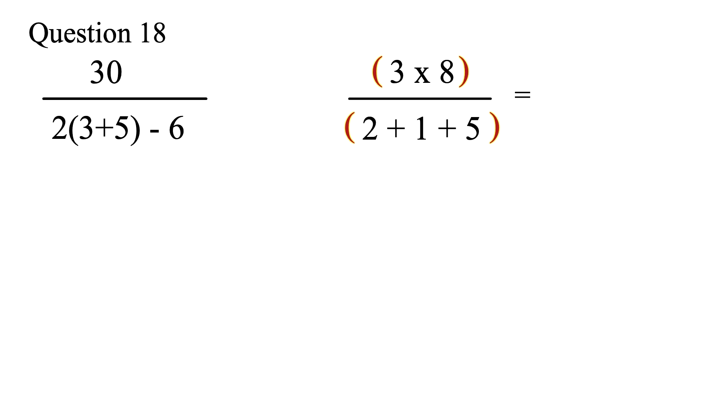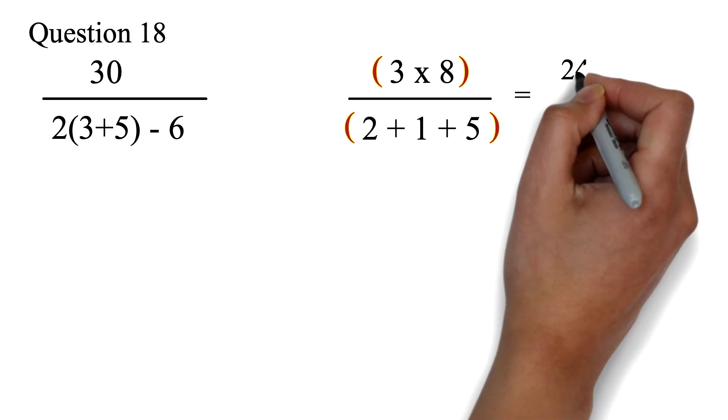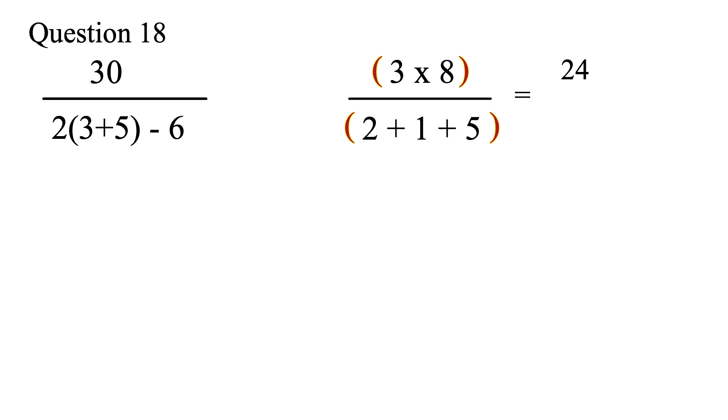So, from the order of operation, we do parentheses first. We have 3 times 8, which is 24. Again, we work on the parentheses, 2 plus 1 plus 5, which is 8.